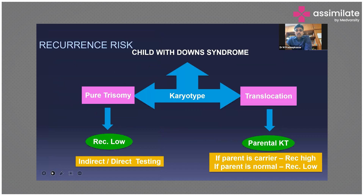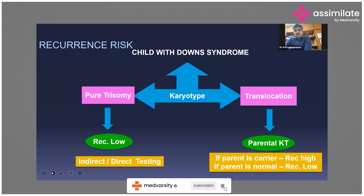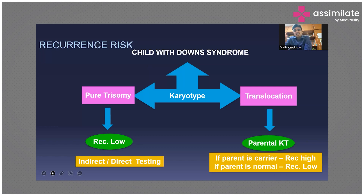In a family with a child with Down syndrome, do karyotyping. If it is a translocation, check parental chromosomes. If parents are carriers, recurrence is high — offer prenatal diagnosis by chorionic villus sampling or amniocentesis. If the parents are normal, the translocation is accidental and you can reassure the family that recurrence is low. If the karyotype of the index child is pure trisomy 21, recurrence risk is low — less than one percent — and they can opt for indirect or direct prenatal testing if they don't want to take that risk.